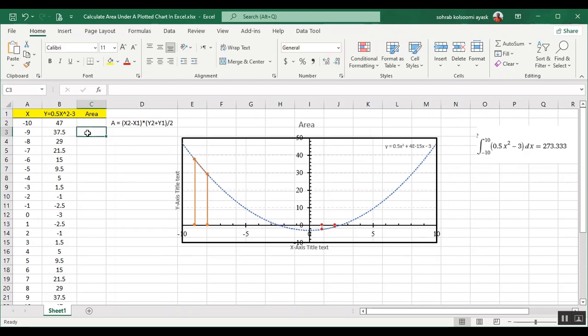But I want to calculate based on trapezoidal method based on this formula in D column. It is so easy to calculate average of y value multiplied by difference of x value.